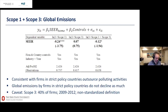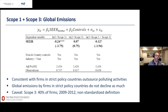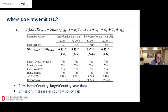We look at scope 3 and find a positive but statistically indistinguishable from zero effect — they use slightly more pollution upstream along the supply chain. When we combine scope 1 and scope 3, asking whether firms substitute their own activities with scope 3, we find that global emissions for these firms are actually about half of what you'd estimate from direct activities alone. It seems there is some pushing of emissions upstream in the supply chain.